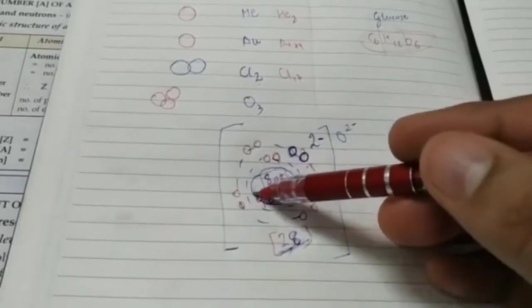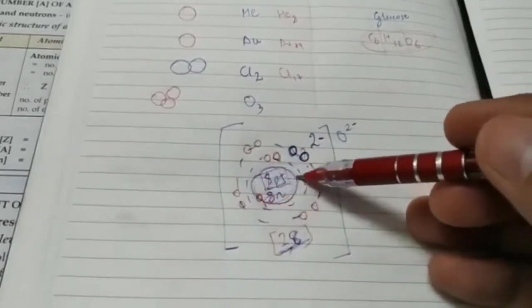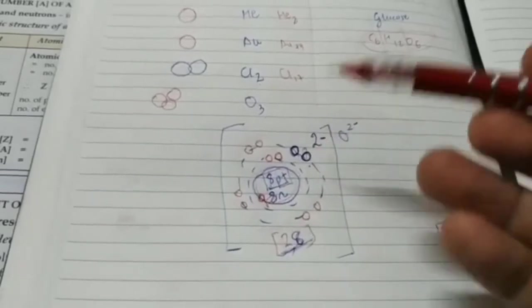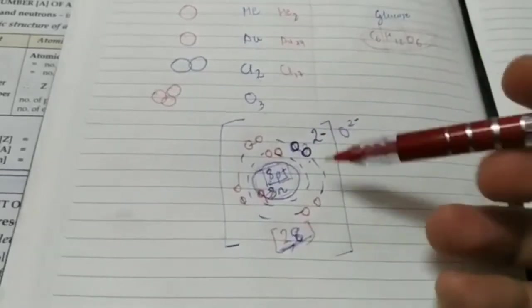Note that number of neutrons don't matter as far as chemical reactions are concerned. Because in chemical reactions, the only thing that participates in the reaction is the electron, which depends on atomic number, not the mass number. And when we calculate the mass number, we are adding protons and neutrons. Why not the number of electrons? Because as I said, electrons hardly have any mass. So we can ignore that.